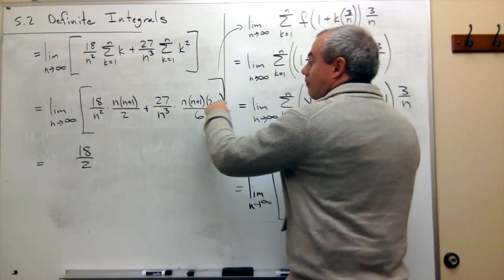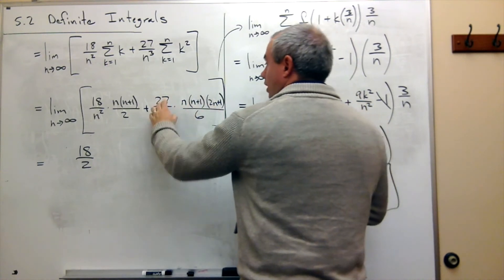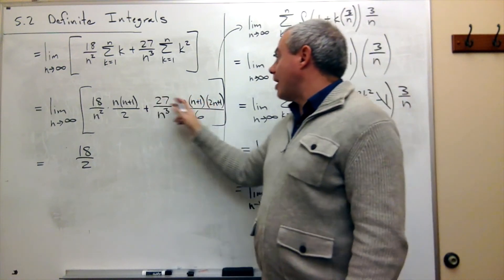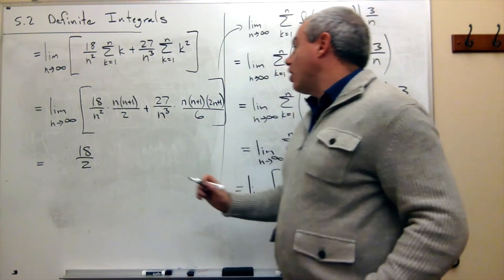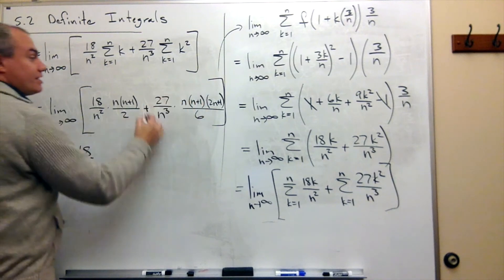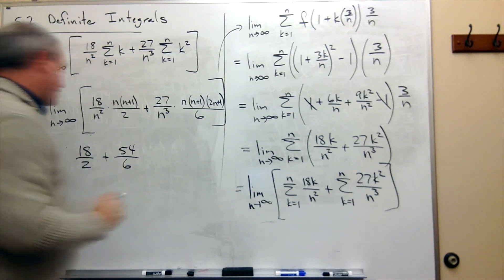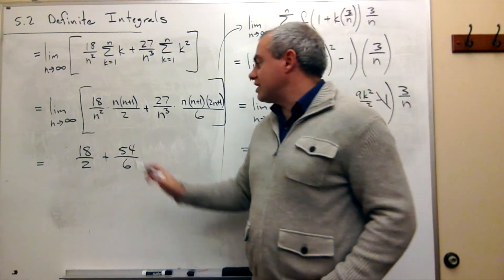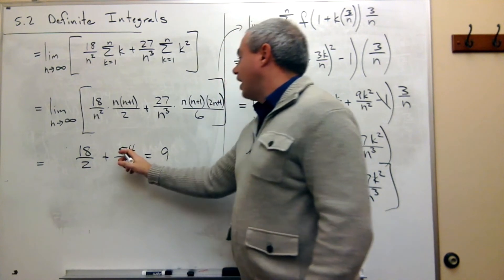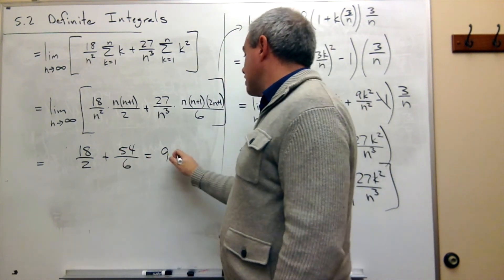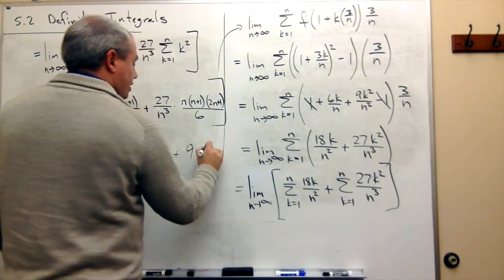What about the second term? If I multiply this all out, I've got n times n times 2n times 27, so I've got an n cubed on top and the coefficient would be 54. On the bottom, I have n cubed times 6. So if I take the limit as n goes to infinity, I get 54 on top and 6 on the bottom. So 54 over 6 — well, 18 over 2 — is otherwise known as 9. So we get 9 plus 9, which is 18.